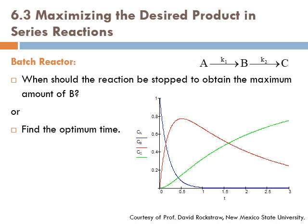Going through the five-step design algorithm, we arrive at concentration profiles for CA, CB, and CC. CA is continuously decreasing because A is a reactant, and CC increases with time as more C forms. However, the concentration of B initially increases, reaches a maximum value, and then decreases after that.